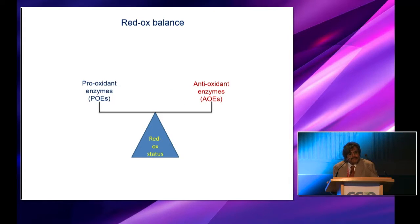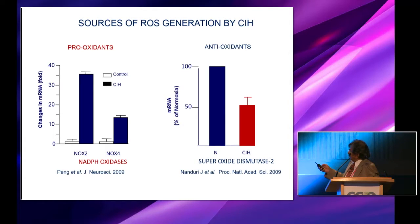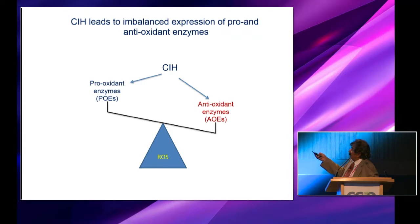Where are the ROS coming from? Pro-oxidant enzymes generate reactive oxygen species and they are degraded by antioxidant enzymes. The balance between pro- and antioxidant enzymes determines the cellular redox state. Measuring NADPH oxidases — NOX2 and NOX4 isoforms — there is a robust induction of NOX2 and to some extent NOX4. But in the same carotid bodies, superoxide dismutase, an antioxidant enzyme, is markedly down-regulated. CIH facilitates transcription of pro-oxidant enzymes while depressing antioxidant enzymes, resulting in increased ROS generation.